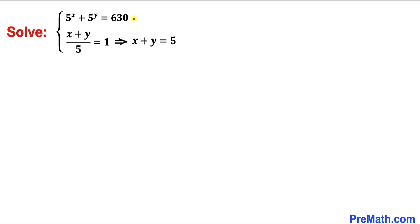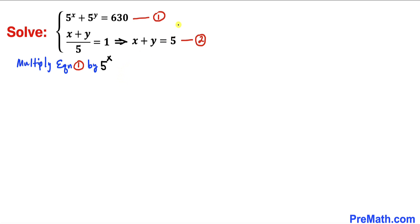Let me call the first equation equation 1 and the simplified second equation 2. Now let's multiply equation 1 by 5^x on both sides, giving us 5^x times (5^x plus 5^y) equals 5^x times 630.